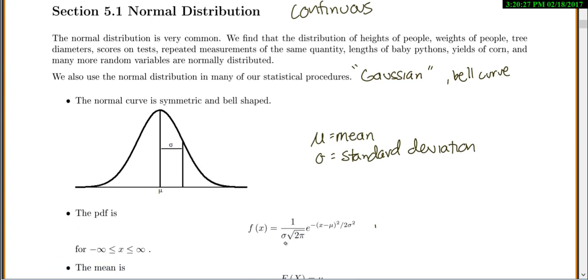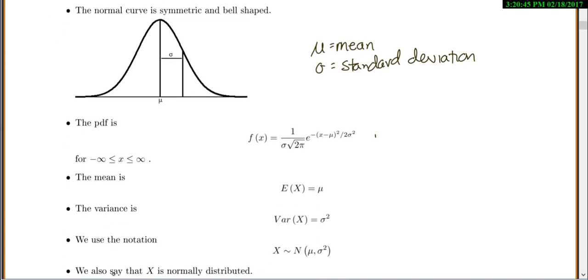So our PDF, this isn't something you actually need to memorize, but the PDF is going to be 1 over the standard deviation times the square root of 2 pi, all times e raised to the power of negative x minus the average squared divided by 2 times the standard deviation squared. It's defined for all real numbers from negative infinity to infinity. The average is always your mean mu. The variance is sigma squared. Standard deviation is sigma.